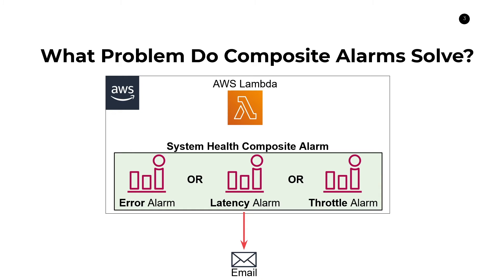If you own multiple different applications — say five different services — you can have a single dashboard showing all the composite alarm badges for each application, and in a single page you can very easily identify whether all your systems are behaving as expected. So that's another really cool benefit of composite alarms: a single source of truth for monitoring your applications' health. That covers why composite alarms are useful and the problems they solve.